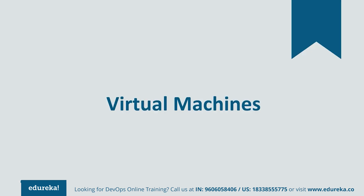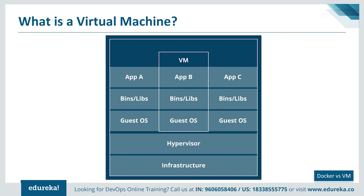A virtual machine is an emulation of a computer system. In simple terms, it makes it possible to run what appear to be many separate computers on hardware that is actually one computer. The operating systems and their applications share hardware resources from a single host server or from a pool of host servers. Each virtual machine requires its own underlying operating system, and then the hardware is virtualized.